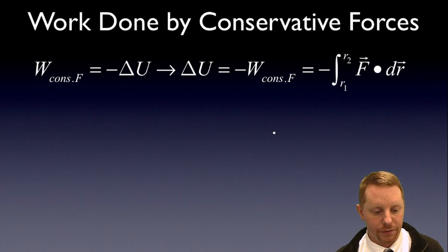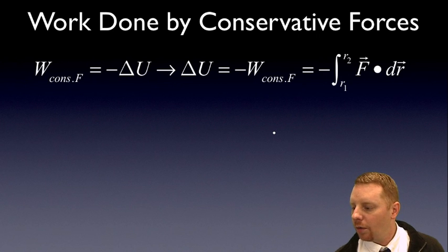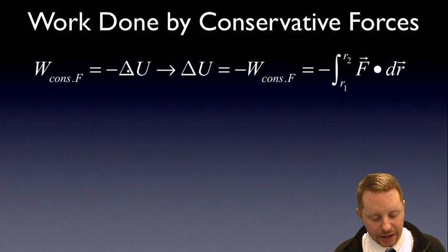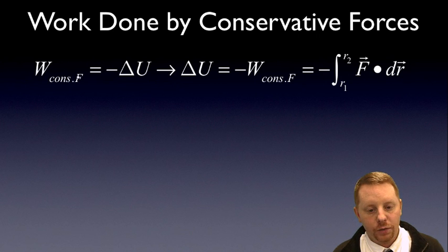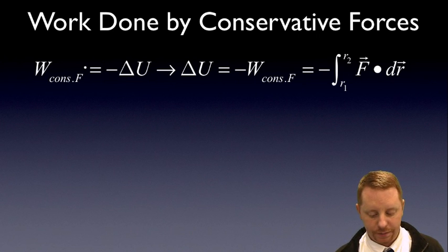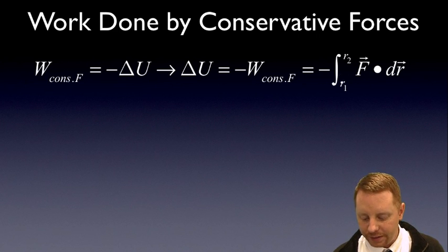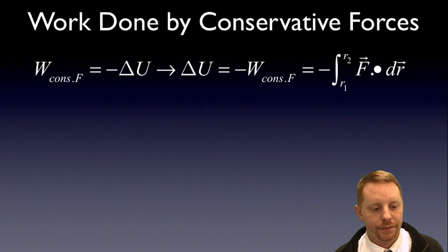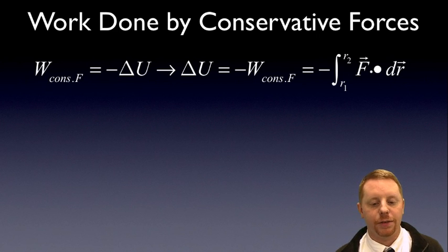Let's talk about the work done by a conservative force. What we're really talking about is the change in potential energy. The work done on an object has to go somewhere — it becomes the change in potential energy. Do work on an object and you give it energy; if work is done by that object, it gives up its energy. So delta U equals the opposite of the work done by the conservative force, which is the integral from position 1 to position 2 of F dotted with dr — just as we calculated delta U equals mgh in a constant gravitational field.